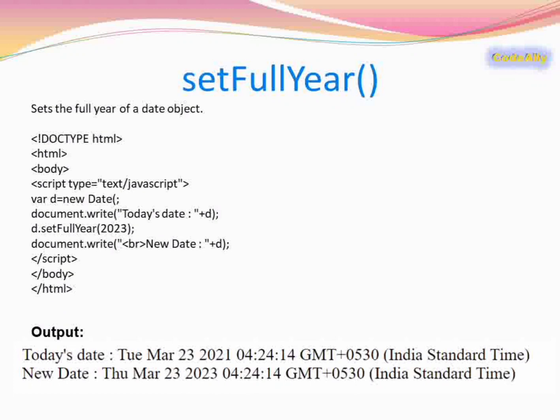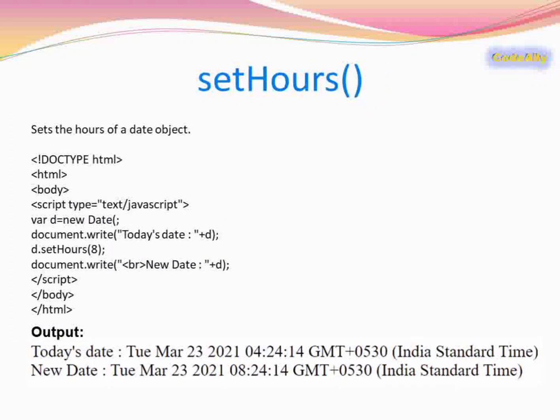Next is setFullYear(). setFullYear() sets the year of the Date object. According to the current date the year is 2021, and after applying setFullYear(2023) the year will become 2023.